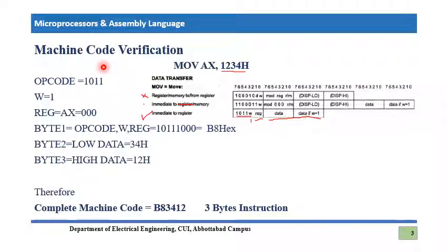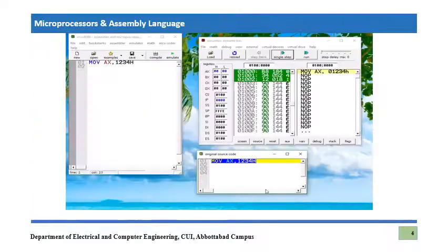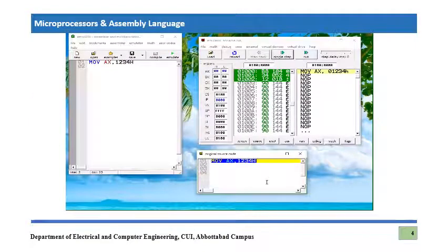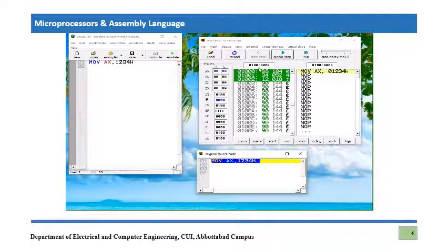Now we are going to execute the instruction MOV AX, 1234h with its equivalent three bytes. We verified the machine code conversion and it is the same value B8 34 12. These are pointed to by CS = 0100 and IP = 0000.